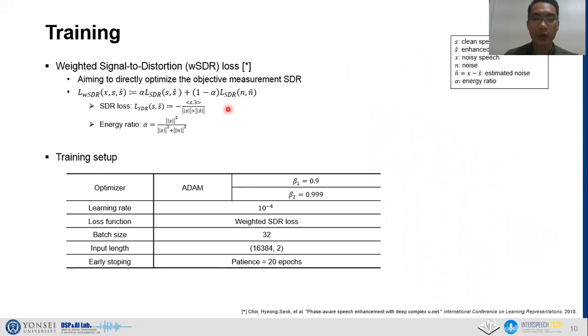To train the model, we use the weighted signal to distortion loss or weighted SDR loss. As described in the equation, the weighted SDR loss is the convex combination of the SDR loss of clean signal and the SDR loss of noise signal. The SDR loss aims to directly optimize the objective measurement signal to distortion ratio, and the combination weight alpha is defined as the energy ratio between the clean speech and the total energy of noisy signal. The table below summarizes other training parameters such as optimizer, learning rate, and batch size.